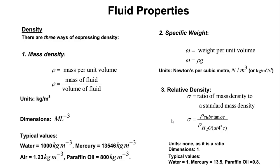Now we want to define some terms we are going to use in this course. The first is mass density — mass density is defined as mass of fluid per unit volume. The symbol we use is rho (ρ), and the units are kg per meter cubed.